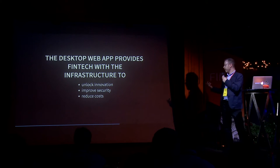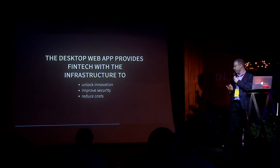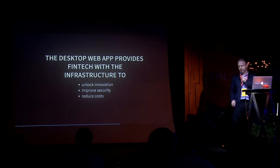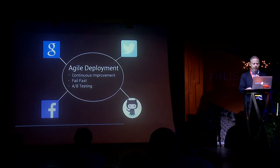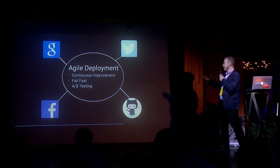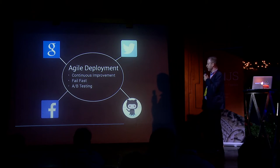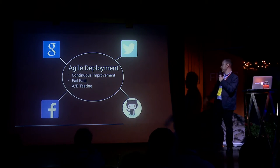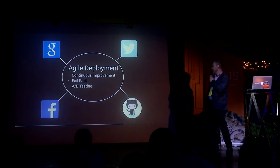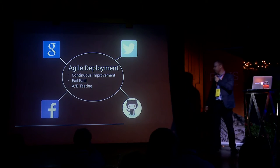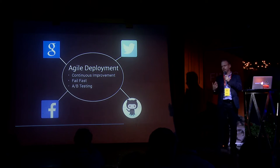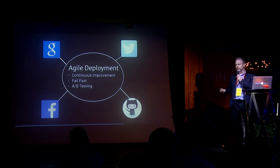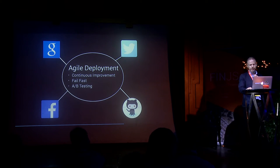The desktop web app, in my opinion, should provide fintech with the infrastructure to unlock innovation, to improve security, and to reduce costs. This is what we've seen on the web — the benefits of agile development unlocking all this value, which is so clear from companies like Google, Facebook, Twitter, and GitHub. Because they can fail fast, they can do A/B testing, they can look at big data across all their usage. This is all stuff that gets unlocked by having real web server deployment.